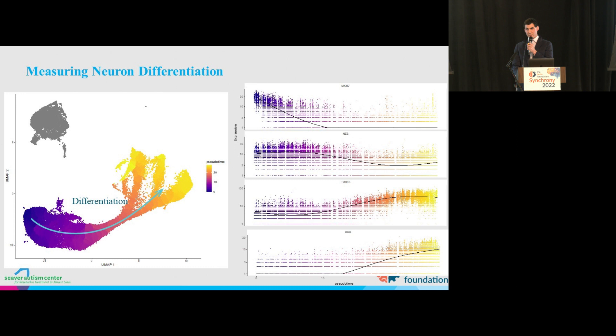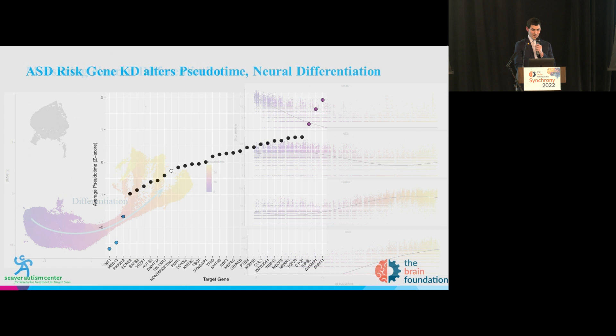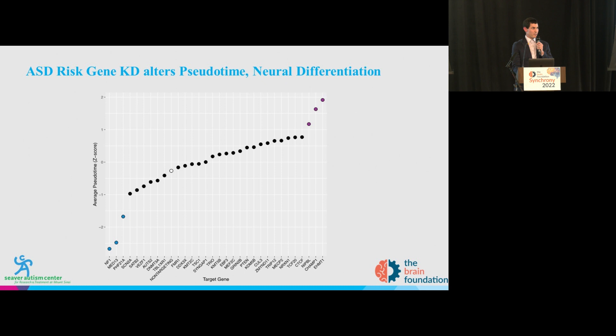The next analysis is to assess whether any of the autism risk genes are affecting neuron differentiation. We use pseudotime analysis, projecting cells along a trajectory based on transcriptional similarity — from cool to warm color. The top two genes are markers of neural progenitor cells, and the bottom two are markers of neuron differentiation. The neural progenitor cell markers are turning off as the neuron differentiation genes turn on, allowing us to interpret our pseudotime axis as neuron differentiation.